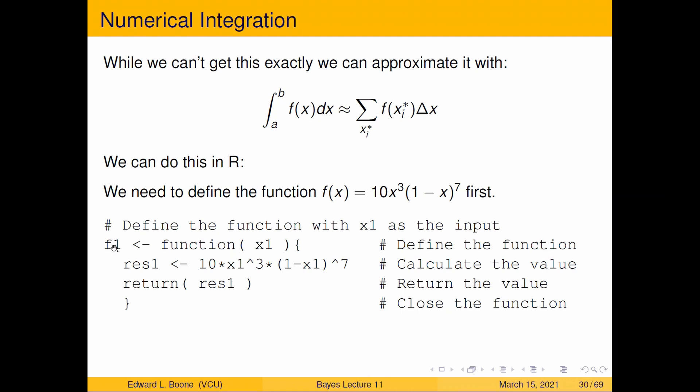It's a function. The only thing we're plugging into it is x1. The result is going to be 10 times x1 cubed times (1-x1) to the seventh and then I'm going to return the result. So I name this res1 and I'm returning it. Some people don't put return statements in their functions and that sort of annoys me because I want to know exactly what's being handed back.